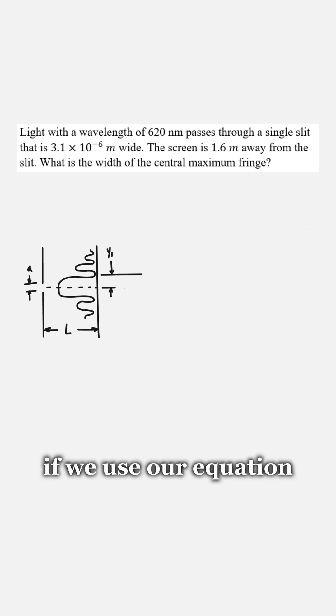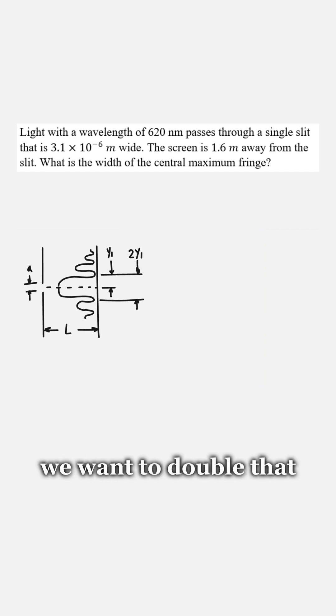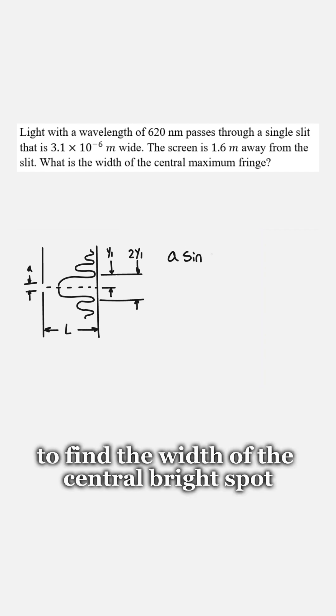If we use our equation it'll tell us the distance from the center to the first dark spot. So we want to double that to find the width of the central bright spot.